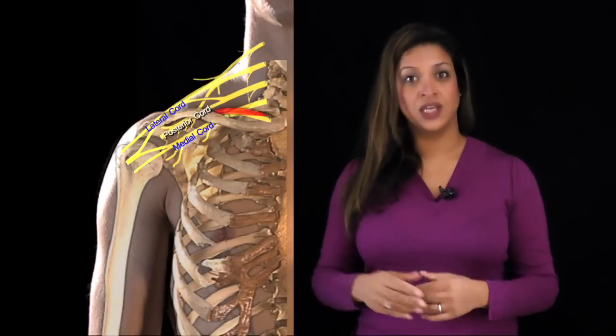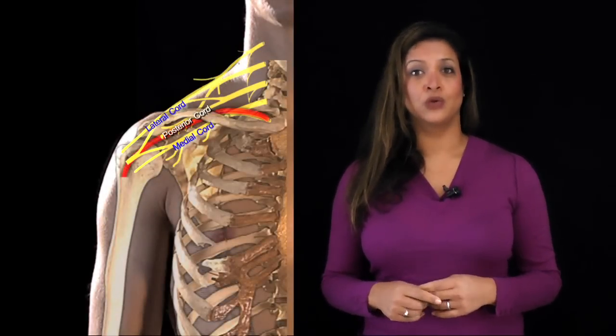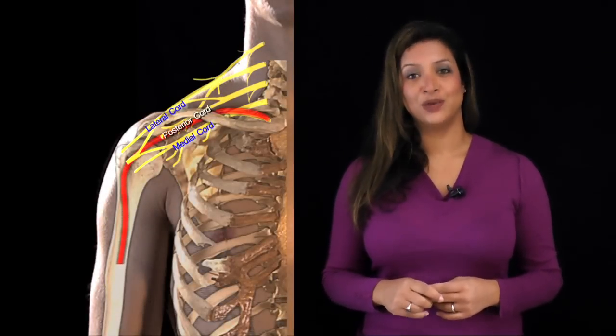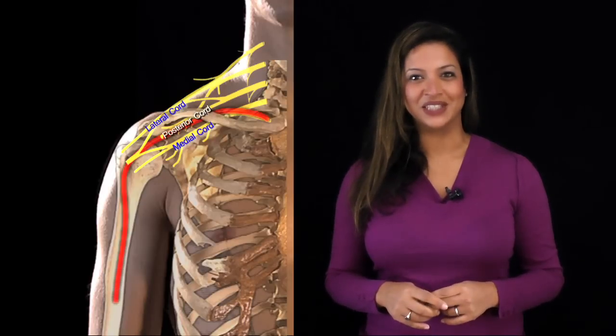The cords are named lateral, posterior, and medial because of their relationship to the axillary artery. The lateral cord lies lateral to the axillary artery, the posterior cord lies posterior to it, and the medial cord lies medial to it.